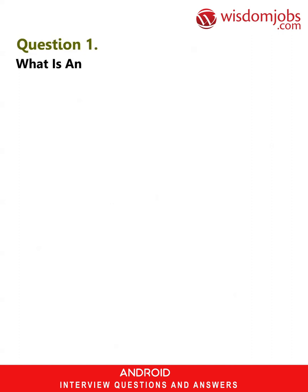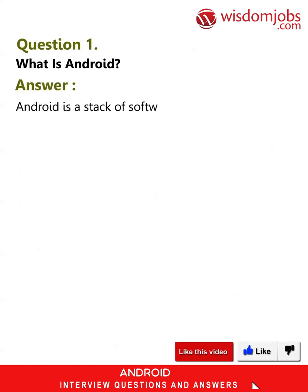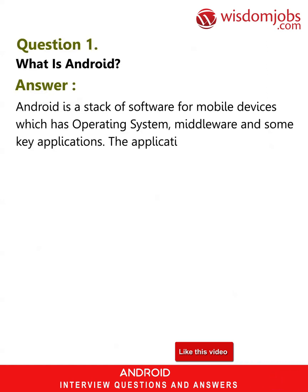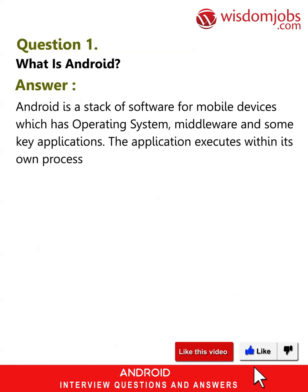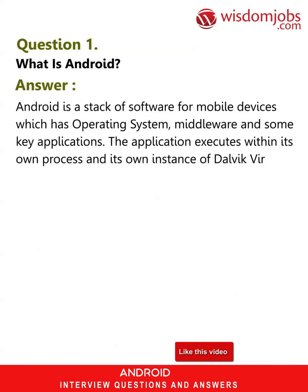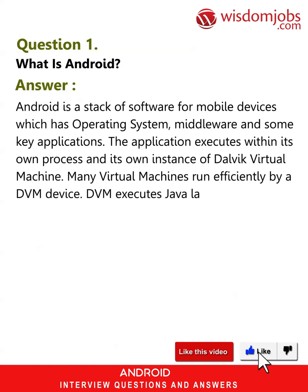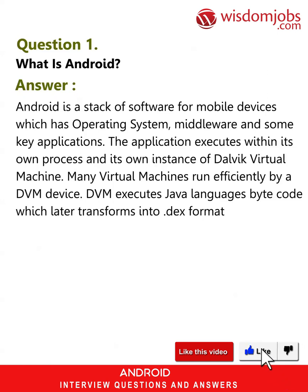Question 1: What is Android? Answer: Android is a stack of software for mobile devices which has operating system middleware and some key applications. The application executes within its own process and its own instance of the Dalvik virtual machine. Many virtual machines run efficiently by a DVM device. DVM executes Java language bytecode which later transforms into DEX format files.